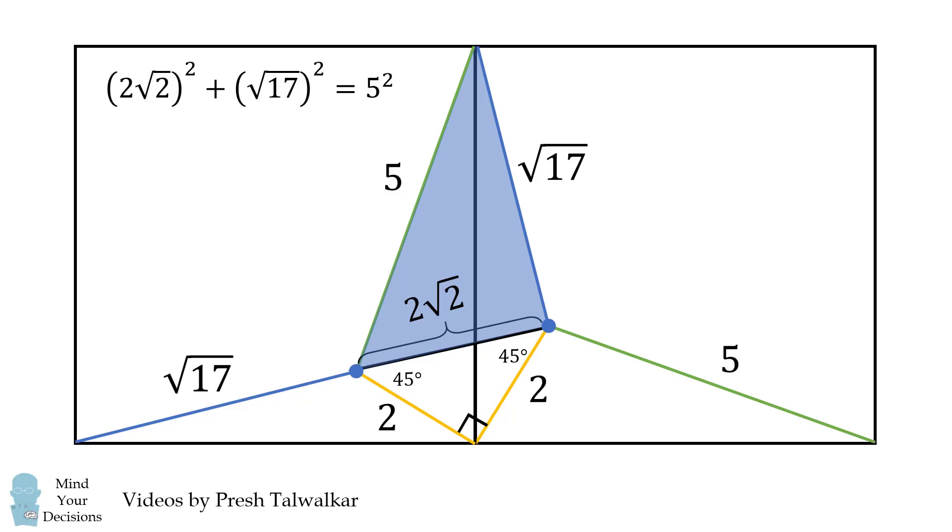Notice that the square of 2 times the square root of 2, plus the square of the square root of 17, is exactly equal to 5 squared. This is because 8 plus 17 is equal to 25. That means this is a right angle triangle, and this is a right angle.